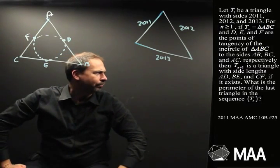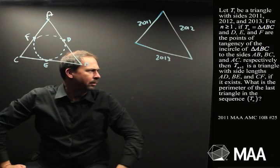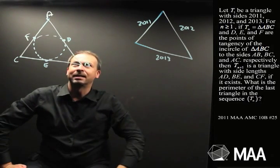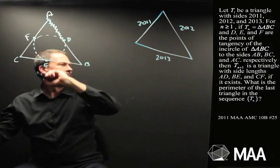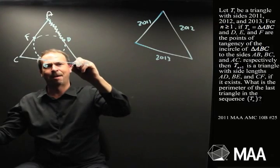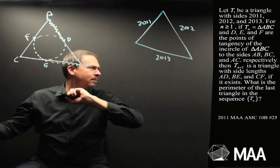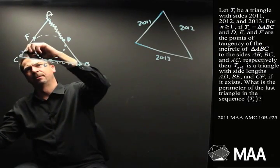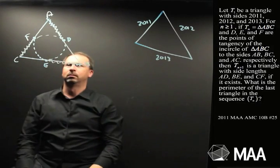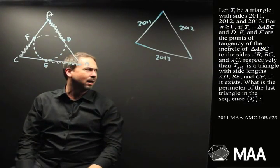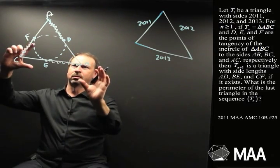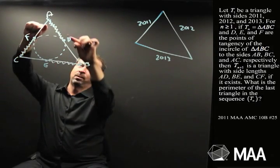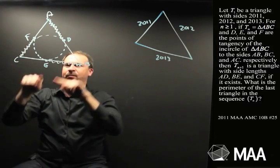Then what? Then Tn plus 1, the next triangle, is the triangle with sides AD. This is getting confusing. AD is that part. BE, that part. And then CF is this part. This is curious. So apparently, you've got one triangle, draw that inside the circle, and then take these three parts, and use those for your next triangle.